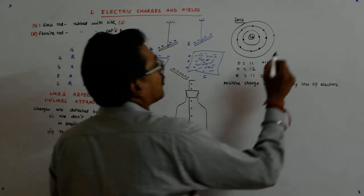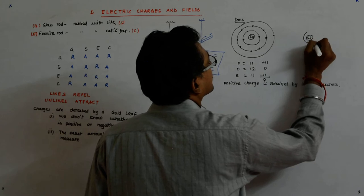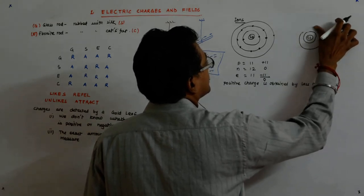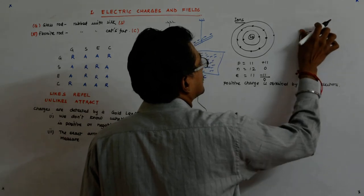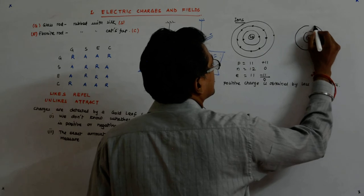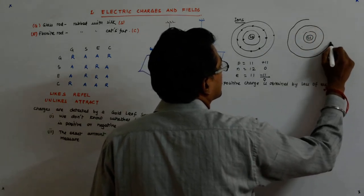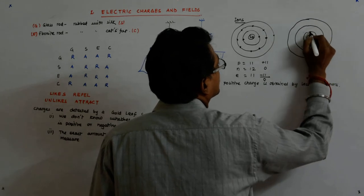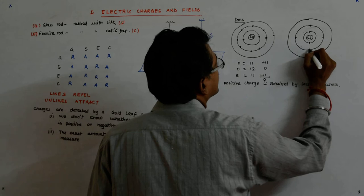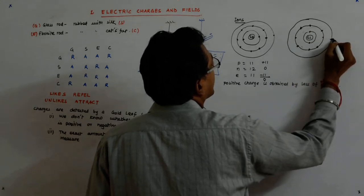What happens in case of chlorine? There is two here, there's eight here, and there is seven here.